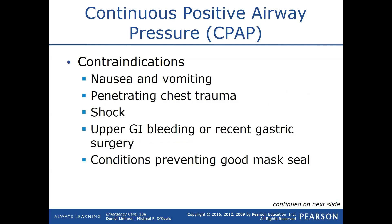More contraindications: nausea and vomiting, because pushing air into the system could cause vomit to be aspirated into the lungs. Penetrating chest trauma would cause more damage. Shock causes mental alteration. Upper GI bleed is also a contraindication — if we blow air into their system, blood coming up can go down into their airway and cause a bigger problem. Also, any conditions preventing a good mask seal.